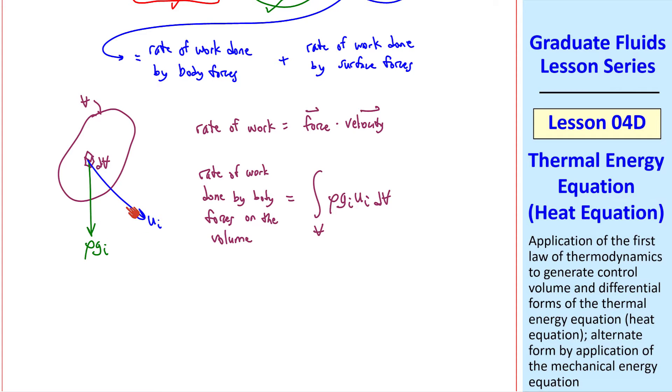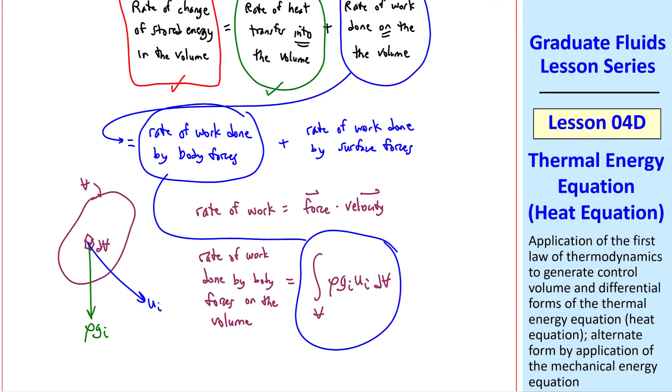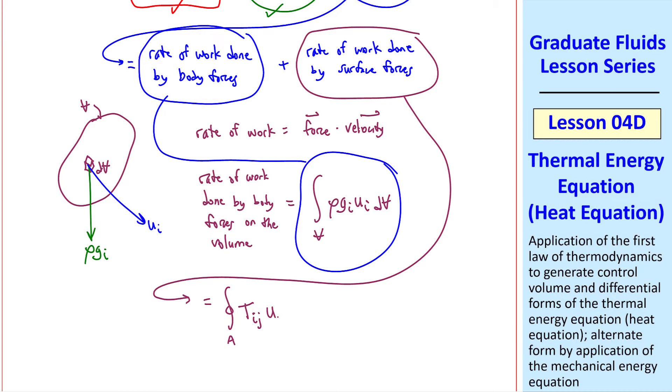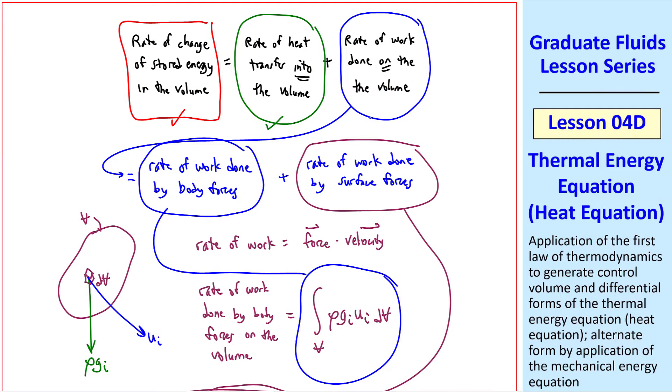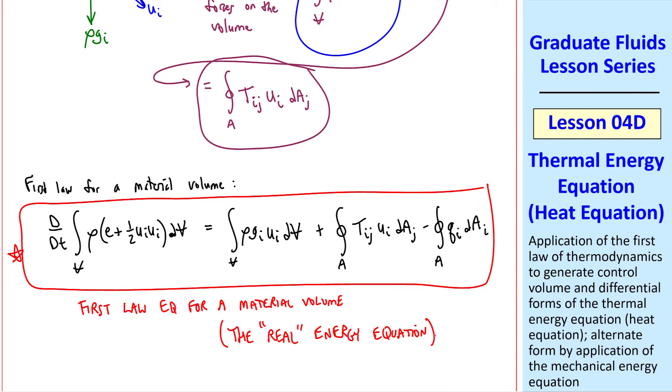So this term is our first term in this right-hand term of our first law equation. The second term is the rate of work done by surface forces. We already dealt with this in a previous lesson for a general fluid with stress tensor tij. It's the area integral tij ui daj. So this is how we'll write this second term. Putting those two terms into here, now we have our third term in the first law equation. Putting everything together, we can write the first law for a material volume, which I like to call the real energy equation. Previously, we derived a mechanical energy equation. This is the real energy equation that comes from the first law of thermodynamics.